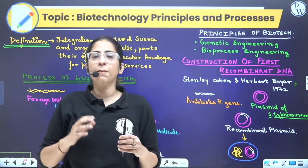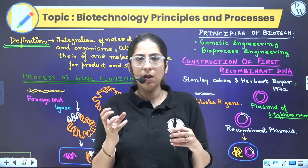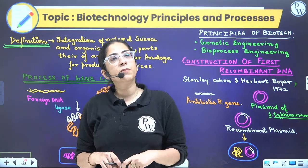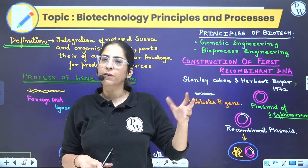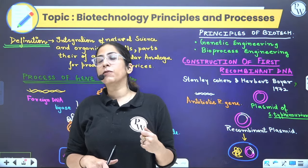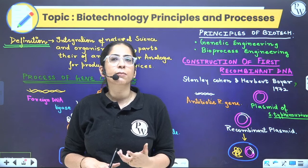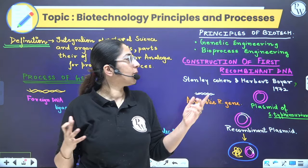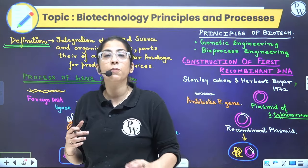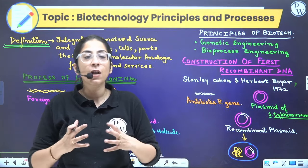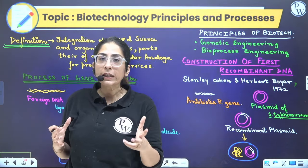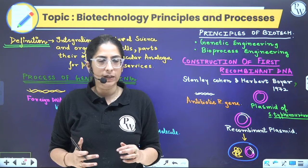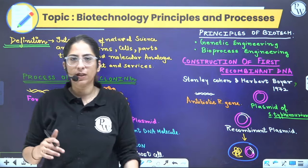Next is bioprocess engineering. Suppose I have created a few cells and modified their genome using genetic engineering. Now I want the product to be formed. Those cells will produce the product, but the amount from just two or three cells will be very less. Human needs are never-ending, so we want products in bulk. For that, bioprocess engineering is required — it is the process by which we culture these cells, extract the product, purify it, pack it, and release it in the market.